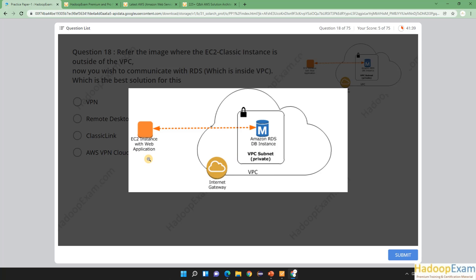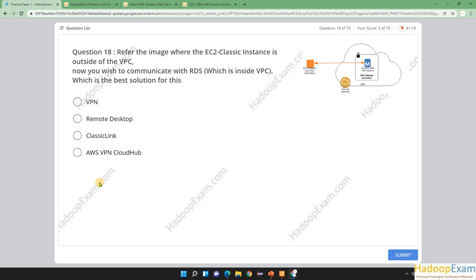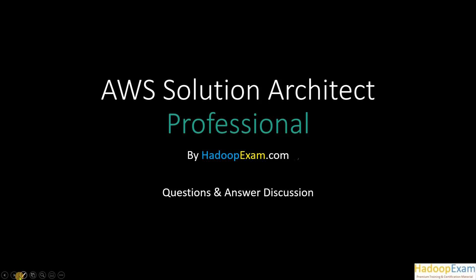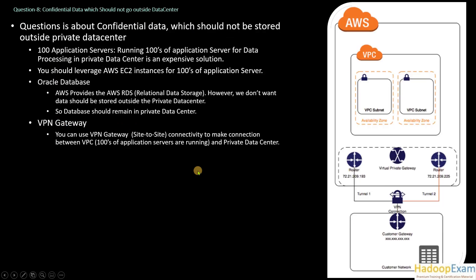We want bidirectional communication from an instance which is outside the VPC. EC2 instances outside VPC are only possible when your instances were launched long ago and you are still using those instances. If you start fresh now, it would not allow you to create EC2 instances without a VPC. But the question asks for this scenario, so we need to understand the concept.